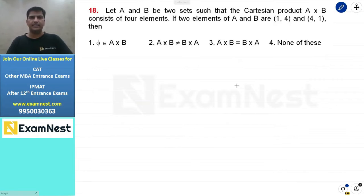Let A and B be two sets such that the Cartesian product A into B consists of four elements. If two elements of A and B are (1,4) and (4,1), then we have two elements given. One is (1,4) and the other is (4,1).